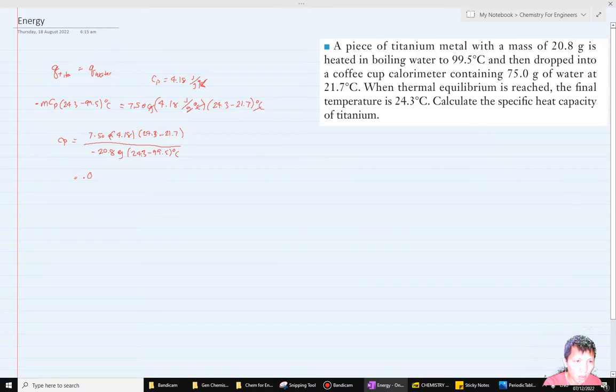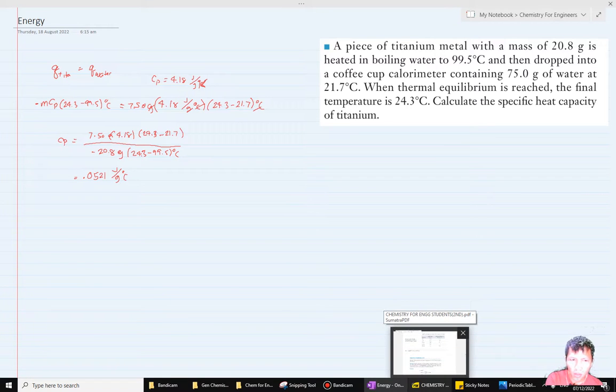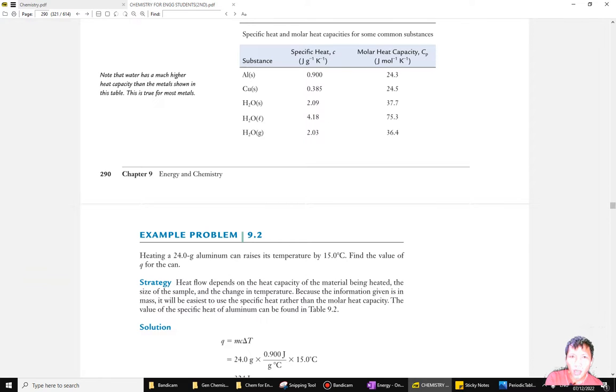You only need a small amount of energy per gram for titanium because metals should have lower specific heat. We can see this from aluminum and copper. I'm just double-checking the Cps of metals. Thank you guys for listening.